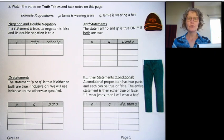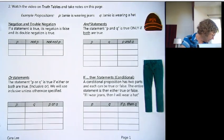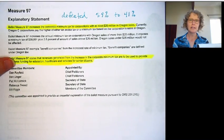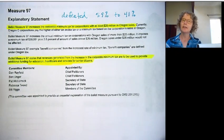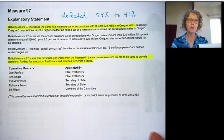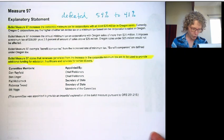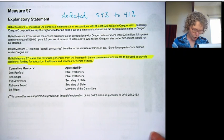Before we get into these truth tables, I want to give you an example to show you the big picture of what we're doing here. I have a ballot measure from fall of 2016, Measure 97. You might remember this.